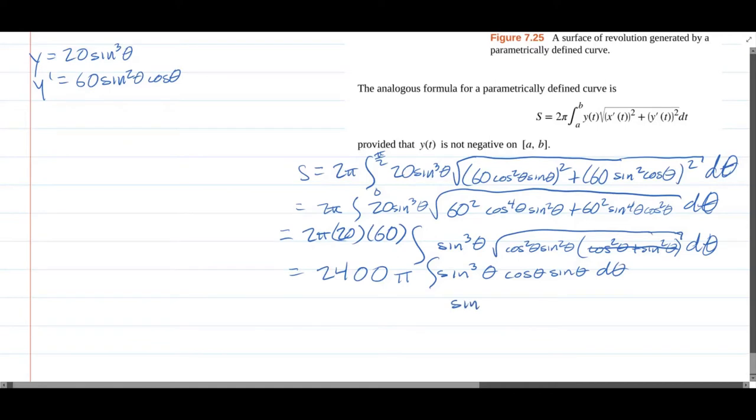We're going to write this as sin⁴θ cos θ dθ. We haven't had to do anything fancy other than follow directions and do a little bit of algebra here. So how do we integrate this? We're going to let u equal sin θ, so du equals cos θ dθ. You just have u⁴ du, and you can finish that off.